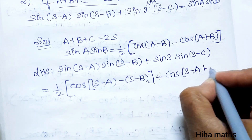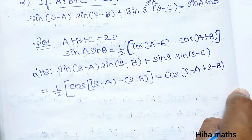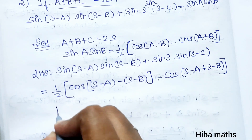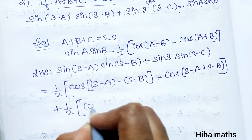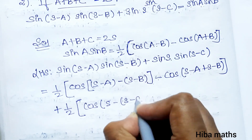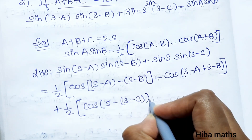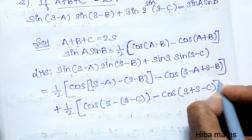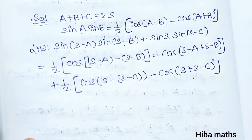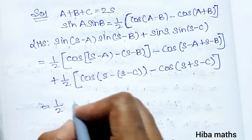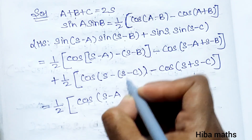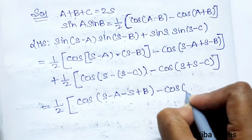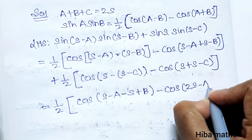Continuing the expansion, plus 1/2 cos[(s) minus (s-c)] minus cos[2s minus a minus b]. The second term inside the bracket expands as cos of 2s minus a minus b.